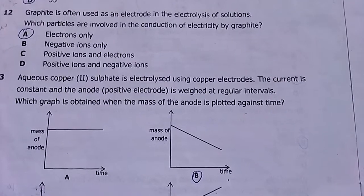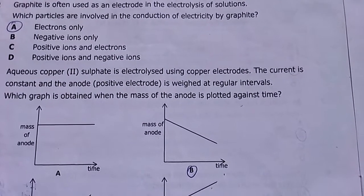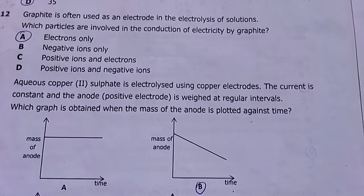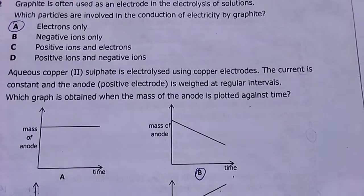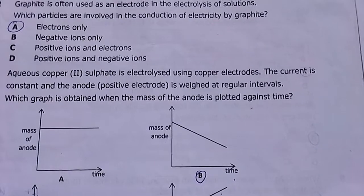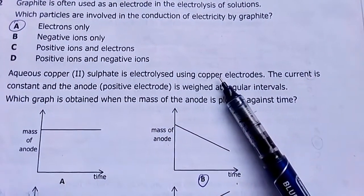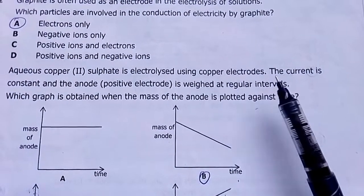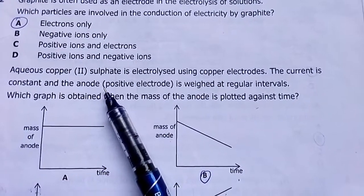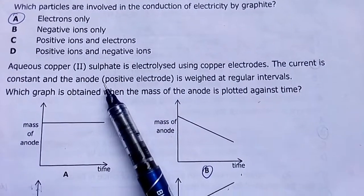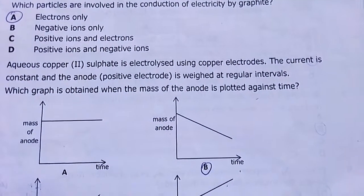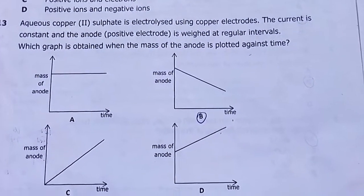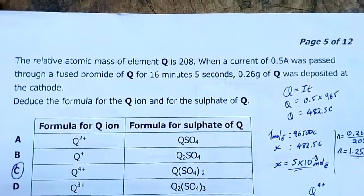Number thirteen: aqueous copper(II) sulfate is electrolyzed using copper electrodes with constant current. The anode is weighed at regular intervals. Which graph is obtained when mass of the anode is plotted against time? Since copper electrodes are active electrodes matching the electrolyte, the anode dissolves. With constant current it dissolves at a constant rate, so mass decreases linearly. My answer is B.